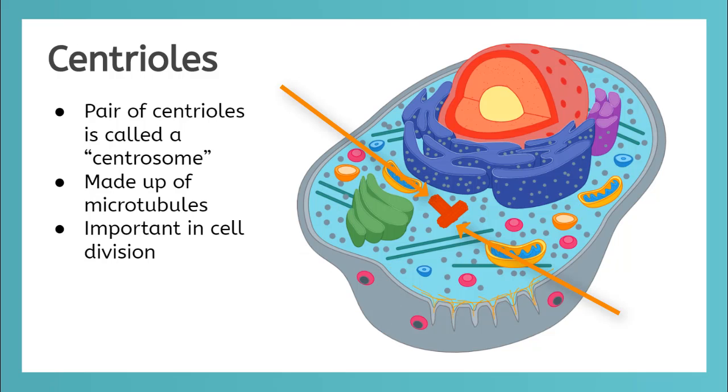The red T is called a centrosome and is made up of two perpendicular centrioles. Each centriole is made up of 27 microtubules in a special shape. Centrioles are most important in cell division.